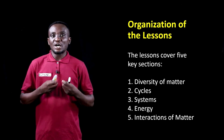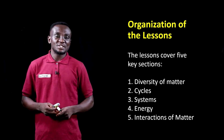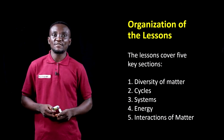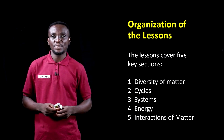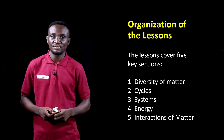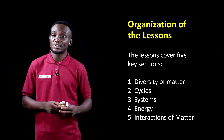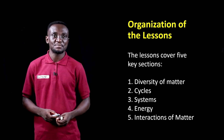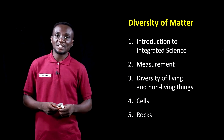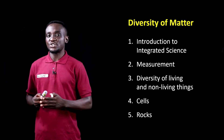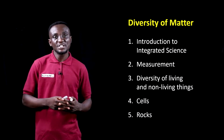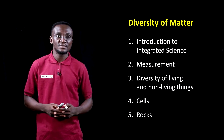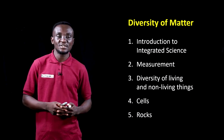Now let's look at how the Integrated Science subject is organized. The lessons cover five key sections: Diversity of Matter, Cycles, Systems, Energy, and Interactions of Matter. In Diversity of Matter, we have introduction to Integrated Science, measurement, diversity of living and non-living things, cells, and rocks.